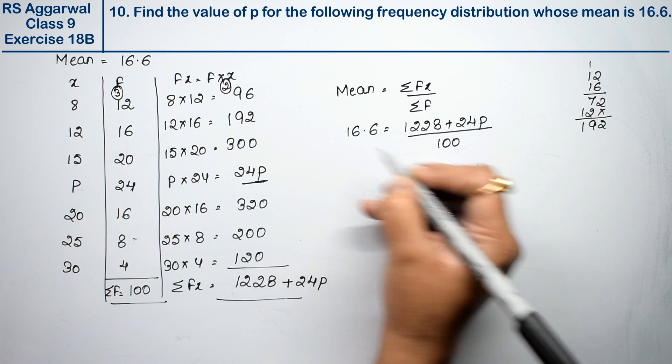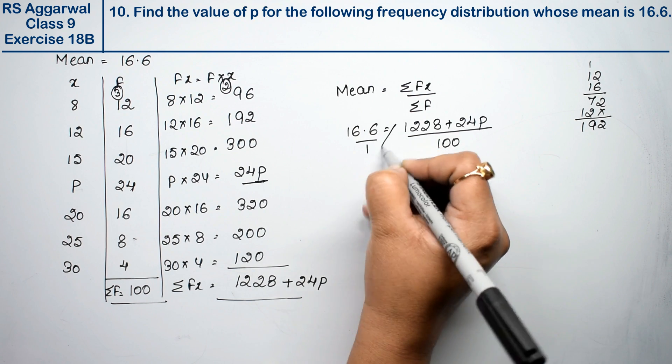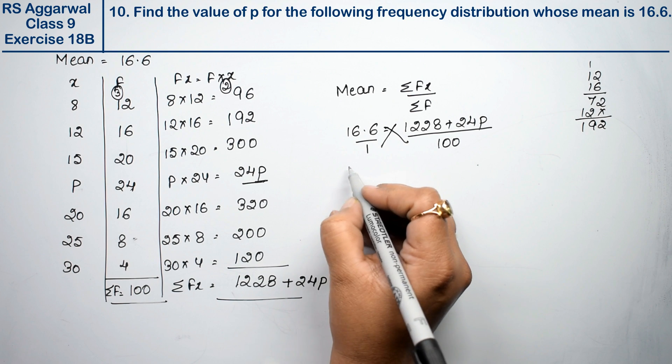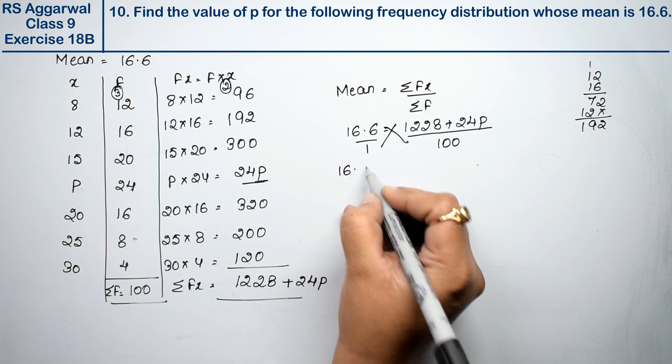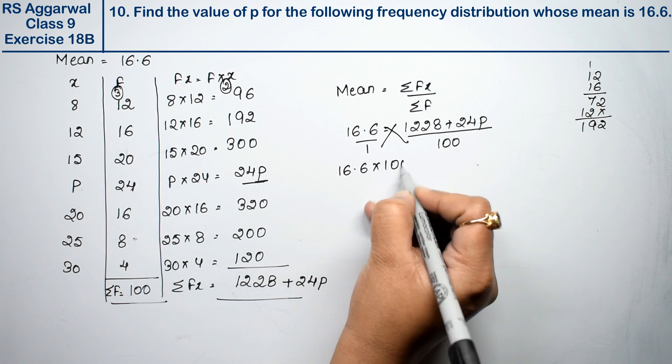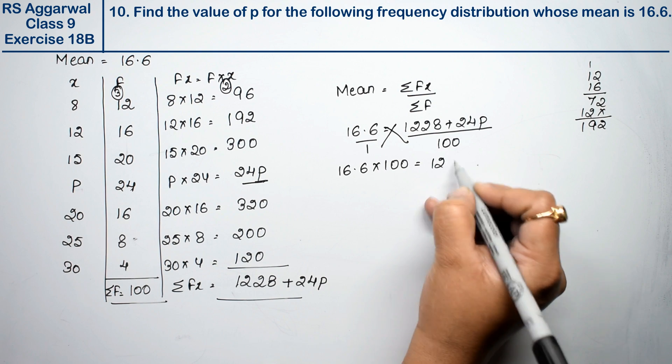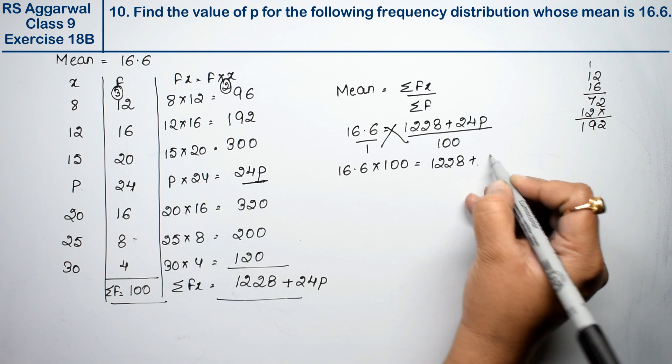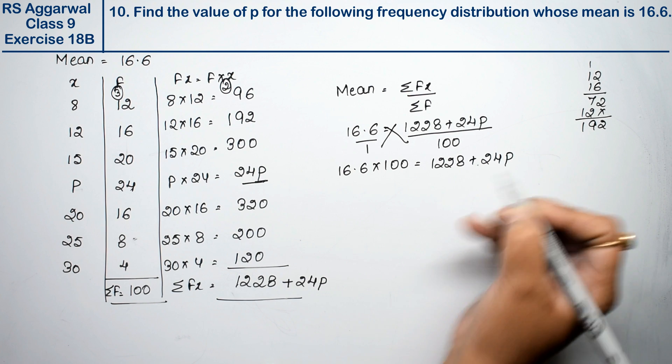Since the denominator is 100, we cross multiply to get 16.6 times 100 equals 1228 plus 24p.